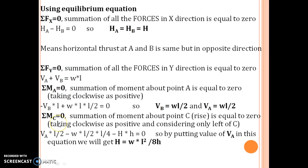Last equation that we will use is moment about crown equals 0. So summation of moment about point C equals 0, taking clockwise as positive and considering only left of C. So moment about crown and taking only left of C: VA multiplied by L by 2 minus W into L by 2 into L by 4 minus H into H equals 0. So by putting value of VA in this equation we will get H equals W L squared by 8H.